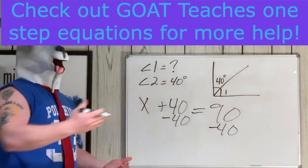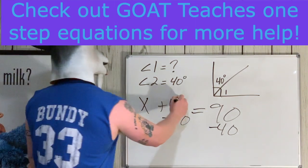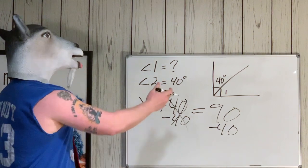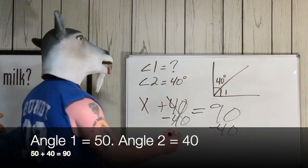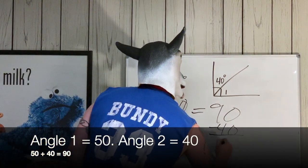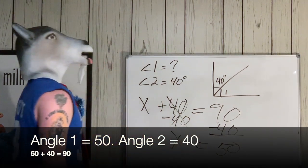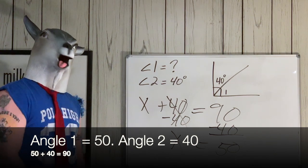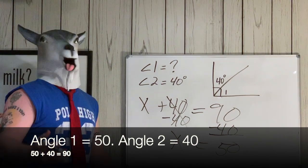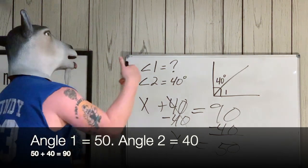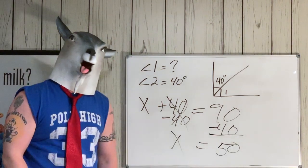Look at this, 40 minus 40? Bro, gone, peace. Now you look at the other side, you got 90 minus 40. Boom, that's easy, that's 50. What's up though, here's our X man, our mystery angle is 50 degrees. That's our answer, X equals 50, angle one equals 50. Boom, mystery solved.